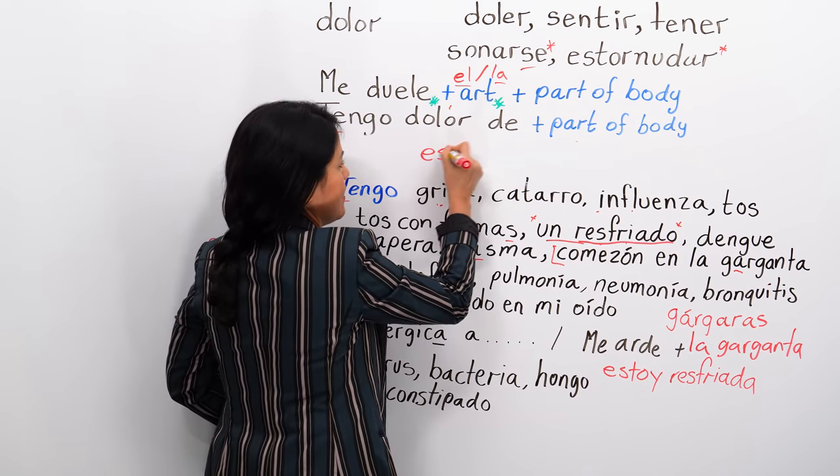Por eso tengo la nariz roja — that's why my nose is red. This could be caused by un virus, una bacteria, or hongos — fungus. Now, estoy constipado in Spanish means your nose is blocked, not the English meaning. It's a false friend.